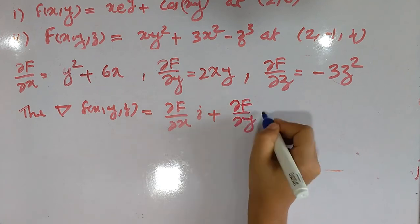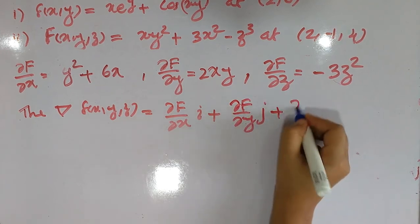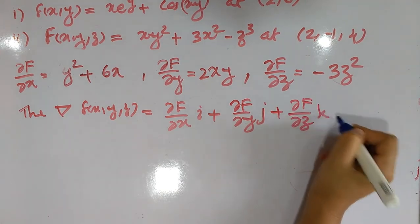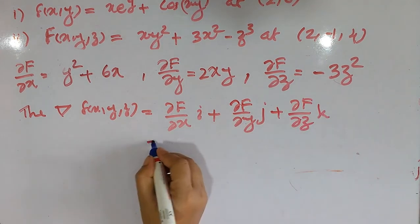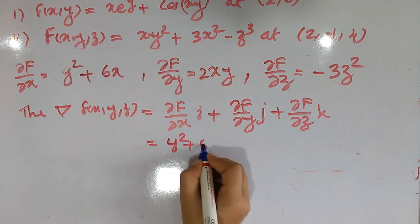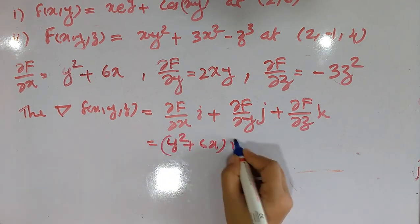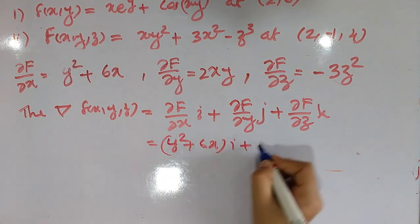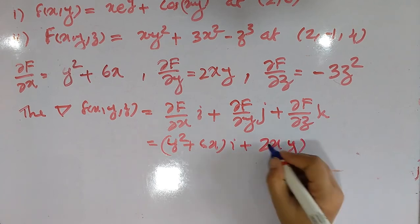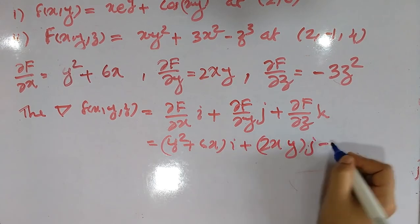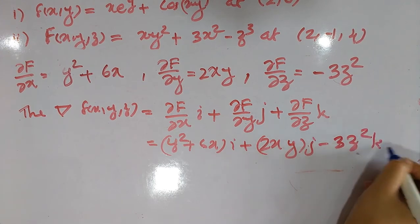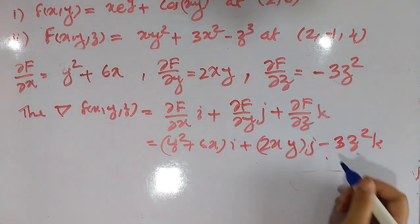For the second function f(x,y,z), the gradient is dou f by dou x times i plus dou f by dou y times j plus dou f by dou z times k. Computing: dou f by dou x is y squared plus 6x, giving (y squared plus 6x) i plus 2xy j minus 3z squared k.